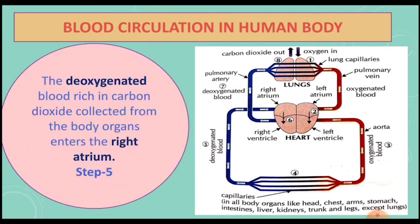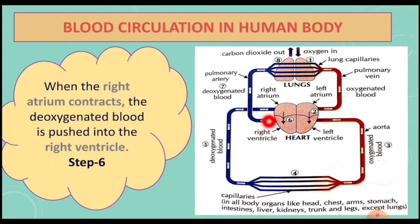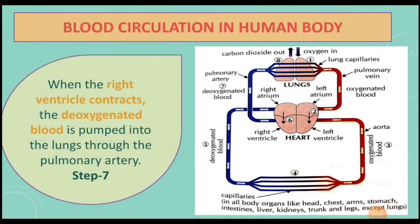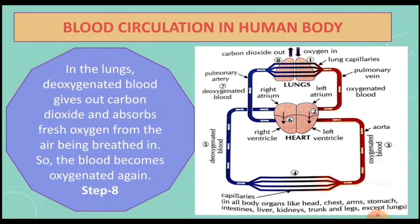Step five: the deoxygenated blood rich in carbon dioxide, collected from the body organs, enters the right atrium. Step six: when the right atrium contracts, the deoxygenated blood is pushed into the right ventricle. Step seven: when the right ventricle contracts, the deoxygenated blood is pumped into the lungs through the pulmonary artery. In the lungs, the deoxygenated blood gives out carbon dioxide and absorbs fresh oxygen, so the blood becomes oxygenated again.